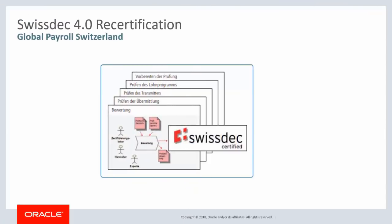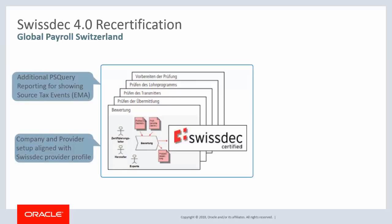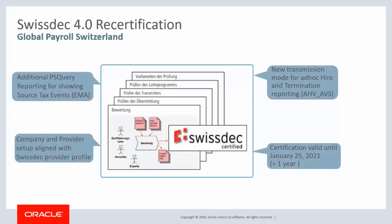Payroll for Switzerland enhancements now meet the most recent SwissSTEC 4.0 certification requirements. The new features include an additional query to monitor source tax events and a new transmission mode for the ad hoc hire and termination reporting. The certification is valid until January 25, 2021, with an additional one year for next recertification activities. This completes our discussion of the SwissSTEC 4.0 recertification enhancements.